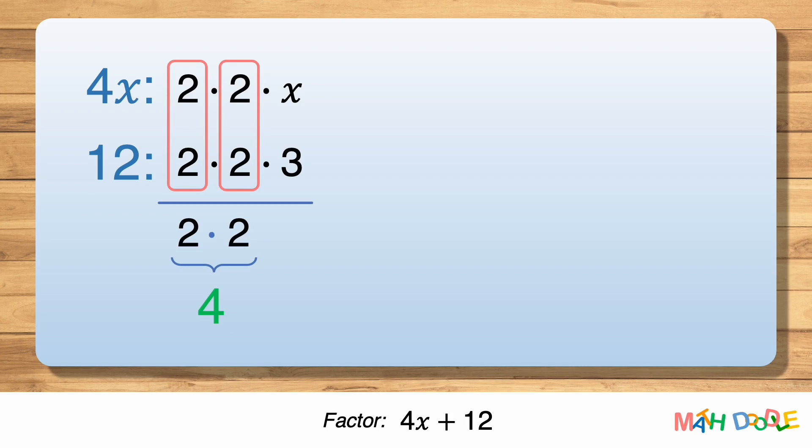Now let's rewrite 4x and 12 as products of their greatest common factor, which is 4. 4x is 4 times x, and 12 is 4 times 3, so 4x plus 12 can be written as 4 times x plus 4 times 3.